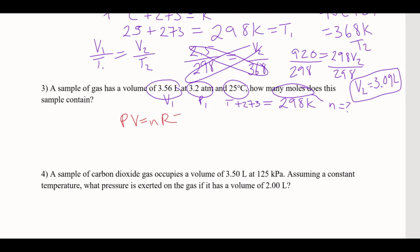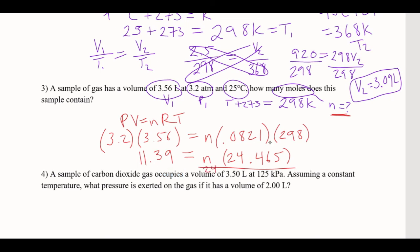All right. So PV is equal to NRT. So I'm just going to plug in the numbers. So pressure, volume. We are looking for moles. So that's N. R is a constant. It's always going to be 0.821. And the temperature is 298. So this is just algebra. So I'm going to multiply the two numbers on the left side and get 11.39 is equal to N. I'm going to multiply the two numbers on the right side. So N times 24.465. We have to divide by that 24 to get the N by itself. So N is equal to 0.466. And that's going to be moles.